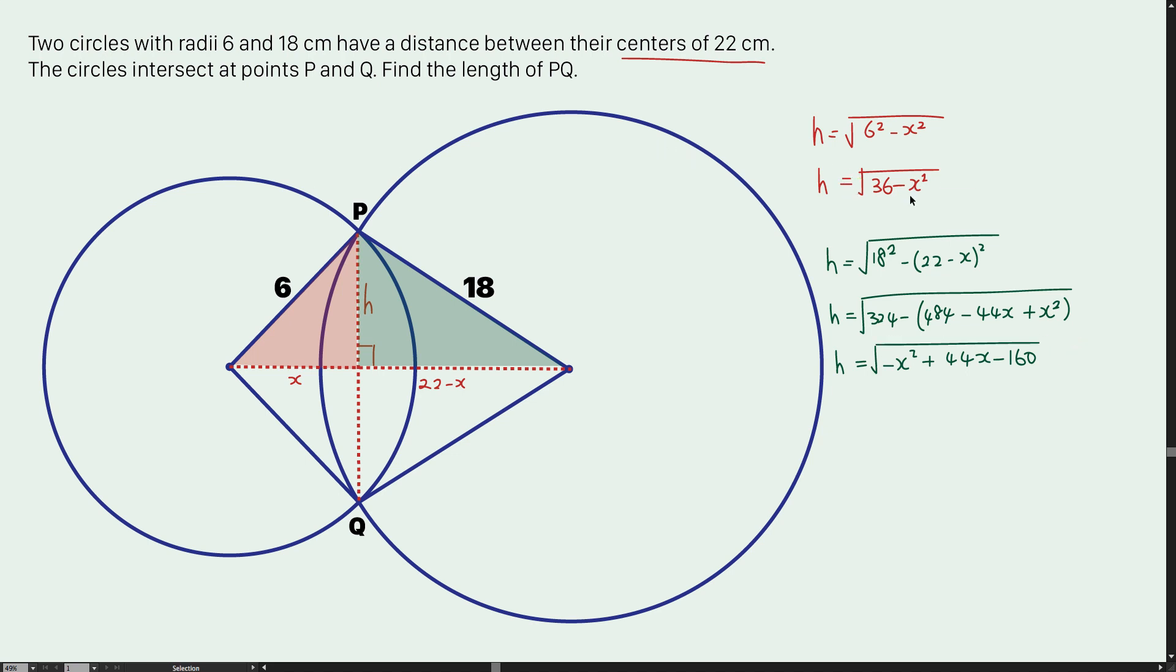Now I'm going to equate the value of h in the red color to the value of h in the green color because it is the same. And now, for the square root, it is offset.